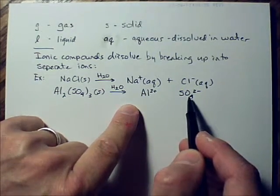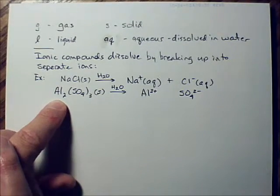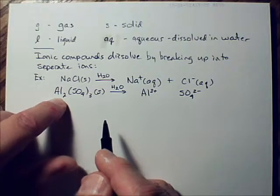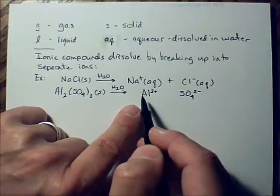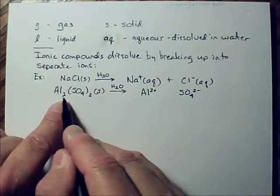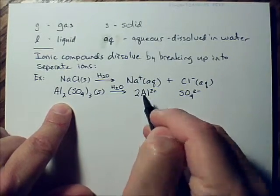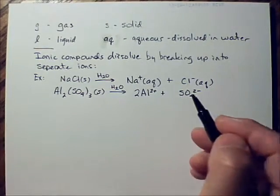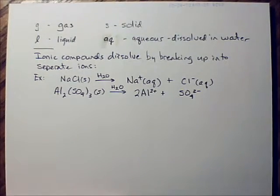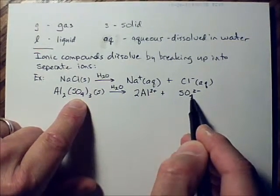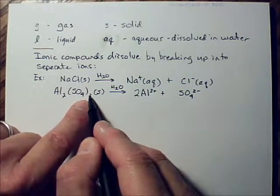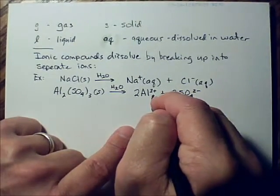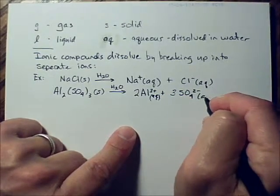Now we need to know how many of each of these we're going to have when we split it up. How many aluminums are there? Look here. 2 aluminums. We have to show 2 aluminums here or we're going to be violating the law of conservation of mass, we can't do that. How many sulfate ions do I have in this formula? 3 sulfate ions. The sulfate itself has 4 oxygens, but there are 3 sulfate ions. So this 3 outside the parentheses is telling us we have 3 sulfate ions. So we write 2Al3+(aq) + 3SO42-(aq), and those are both now aqueous because they dissolved in water.